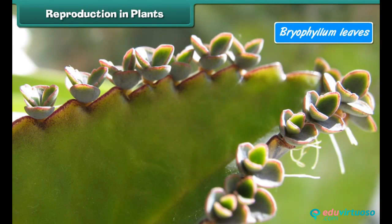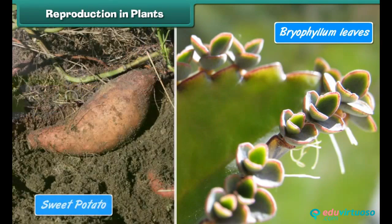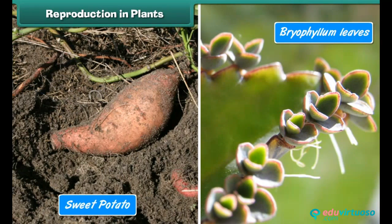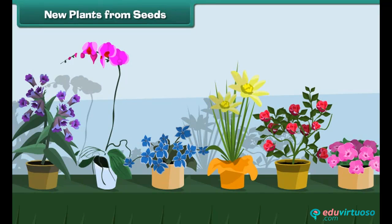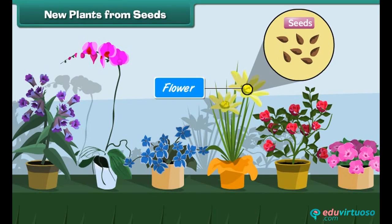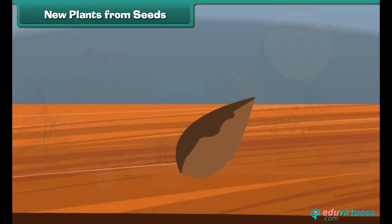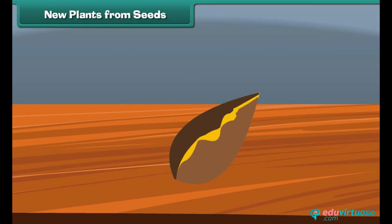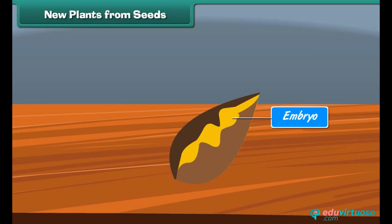Bryophyllum can be developed from its leaves. Sweet potato grows from its roots. New plants from seeds: flowering plants produce seeds. Each seed produced by a plant has a baby plant inside it, called an embryo. The seed is surrounded by a tough covering called the seed coat, which protects the baby plant and prevents the drying up of the seed.